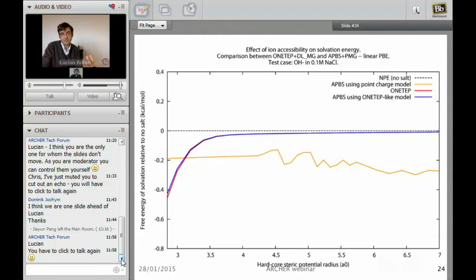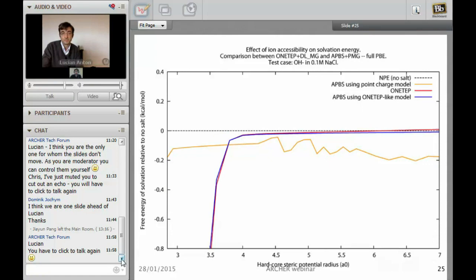This yellow line is the solution APBS has found if you use point charges. I'm not sure why it looks like that. We just wanted to show what's the difference. We have to do this very carefully to provide the same information to APBS in order to get the right solution.